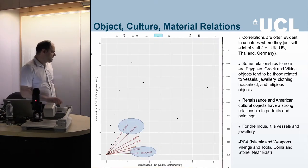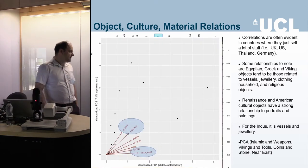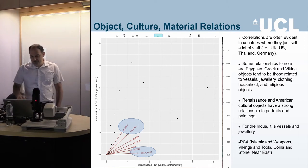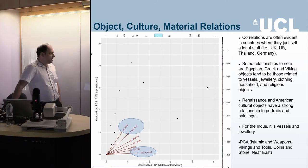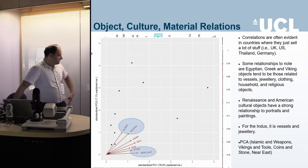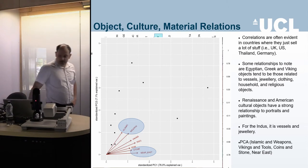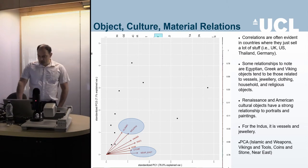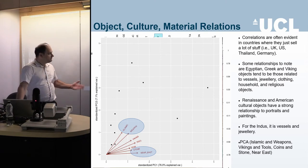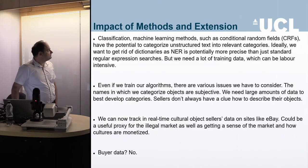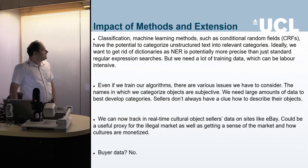Applying principal component analysis to look at how objects relate in terms of sales: Islamic cultures and weapons are often closely associated in principal component space. Viking-related items, and tools, coins, and stones are also grouped closely together.